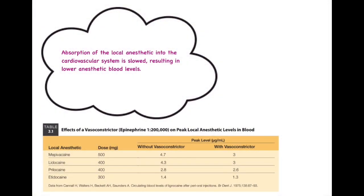The second important role of adrenaline is that the absorption of local anesthetic solution into the cardiovascular system is decreased or minimized, resulting in lower anesthetic blood levels. We need the local anesthesia to act on a particular tissue only; higher local anesthetic blood levels indicate that without acting at the particular site, it is getting redistributed into the entire system. For example, with lignocaine at a dose of 400 mg, without vasoconstriction the peak blood level is 4.3 micrograms per mL, whereas with adrenaline it is reduced to 3.0 micrograms per mL.